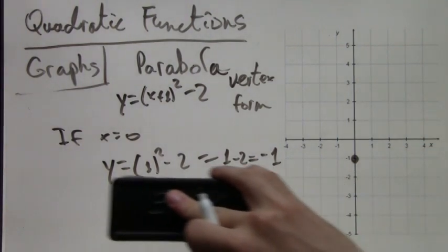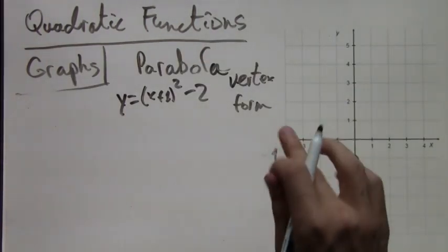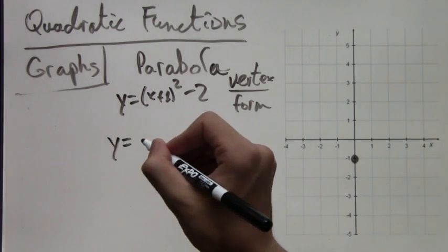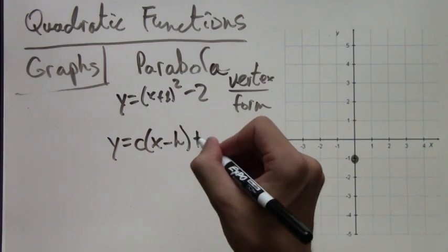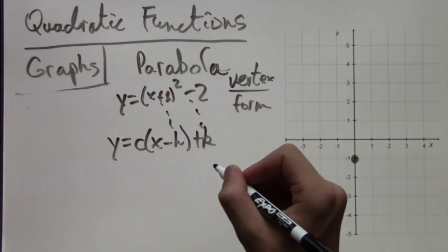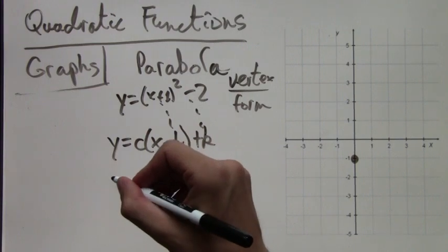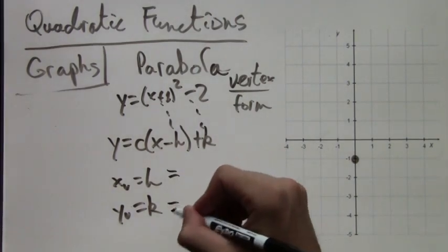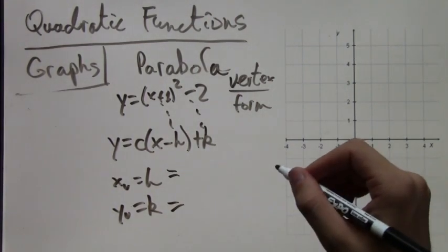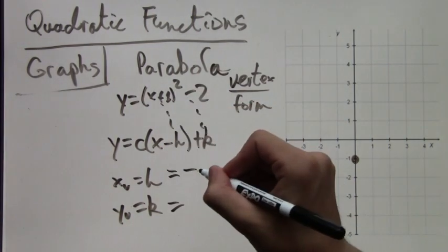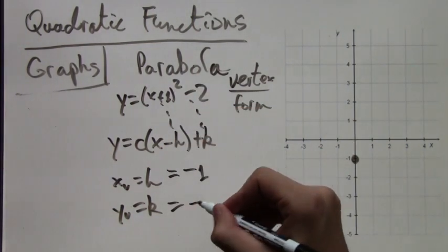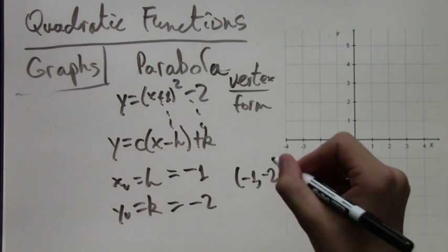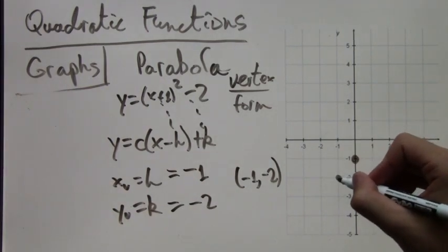Now the vertex. Well, it's vertex form. In general, we have y equals a(x - h)² + k. The point is that x minus h equals x plus 1, so h equals negative 1. And k equals negative 2. So those are the coordinates of our vertex: (-1, -2). There it is.